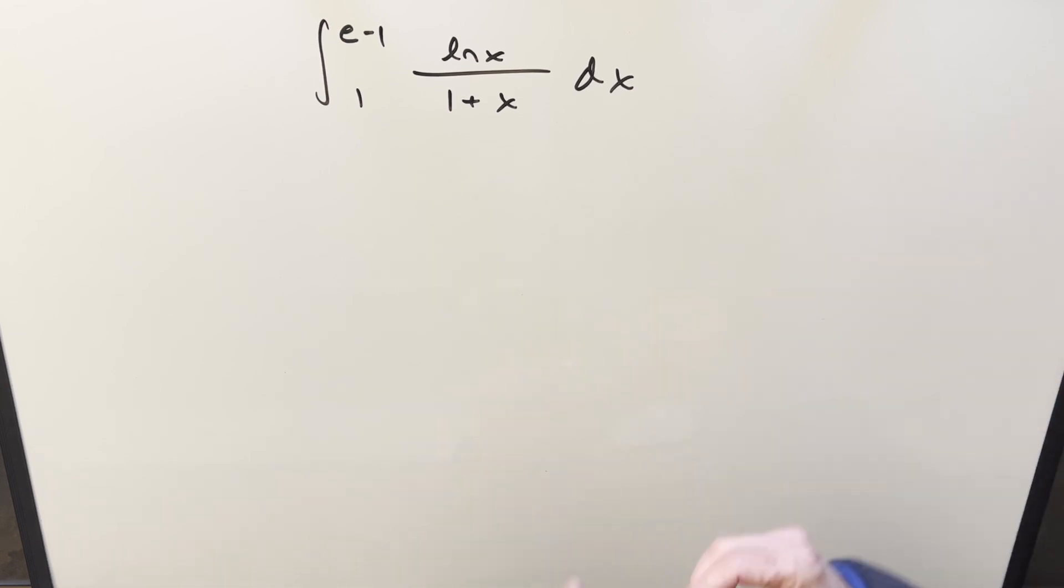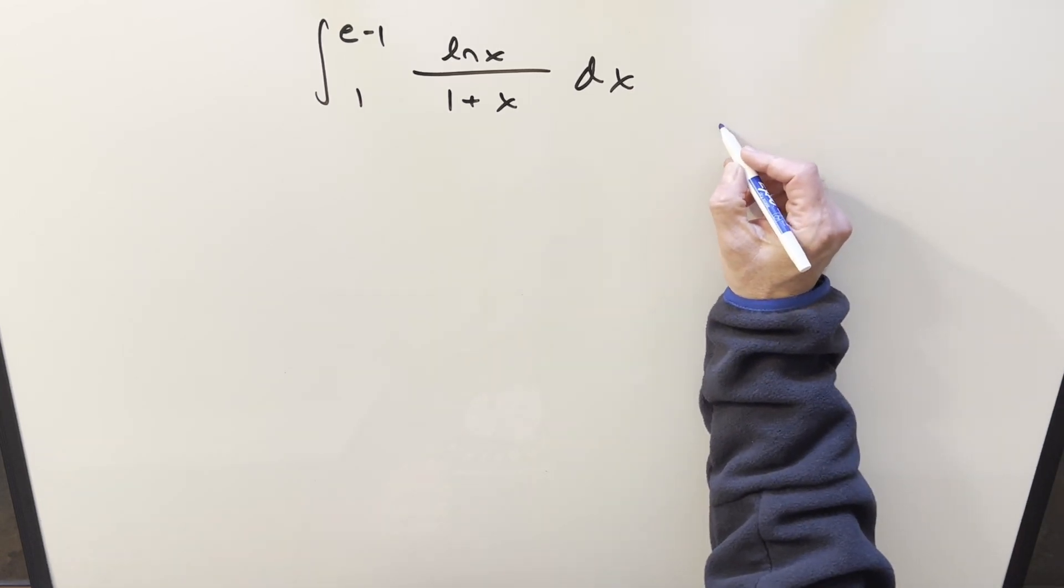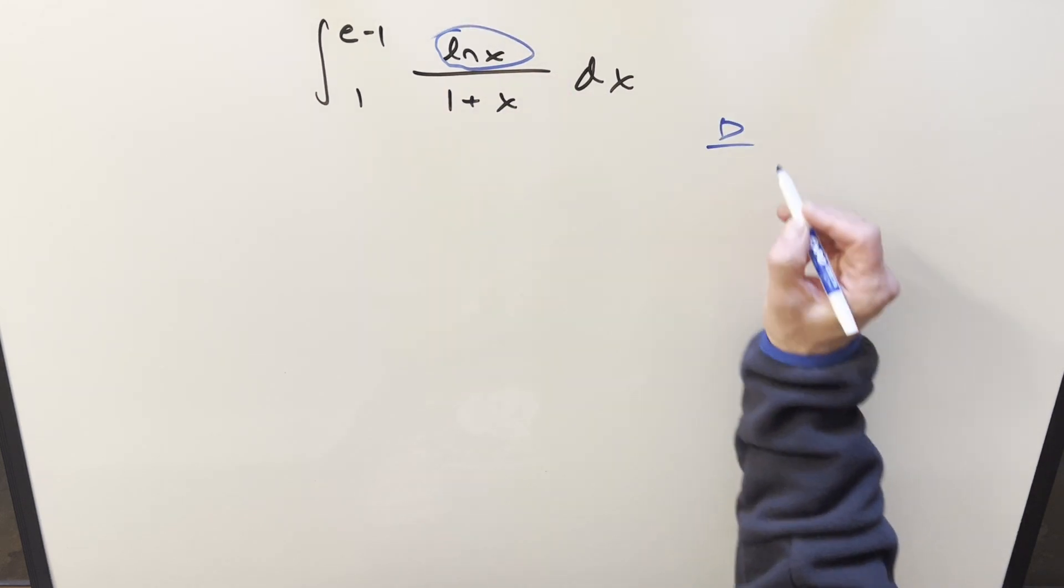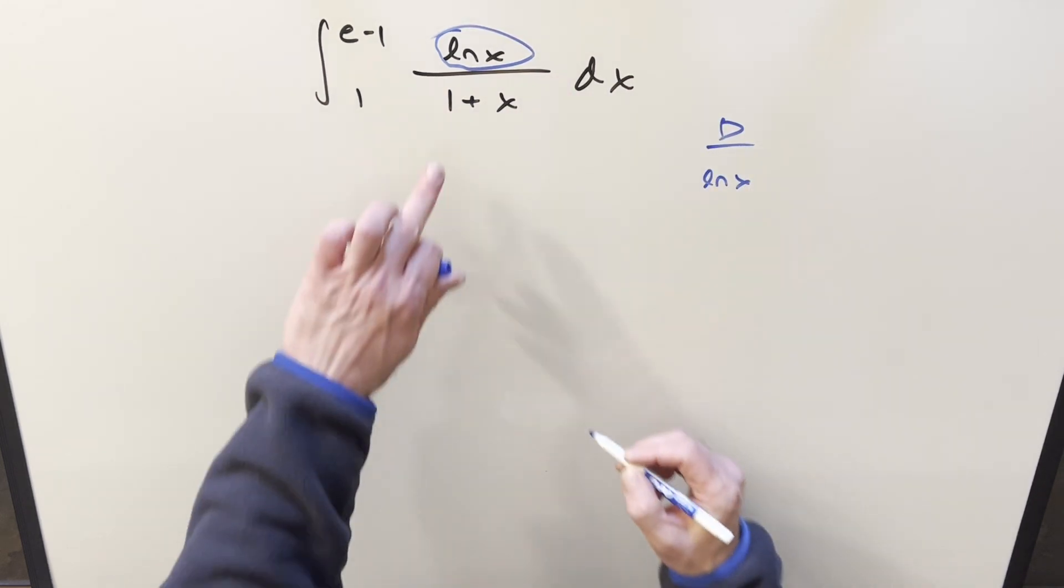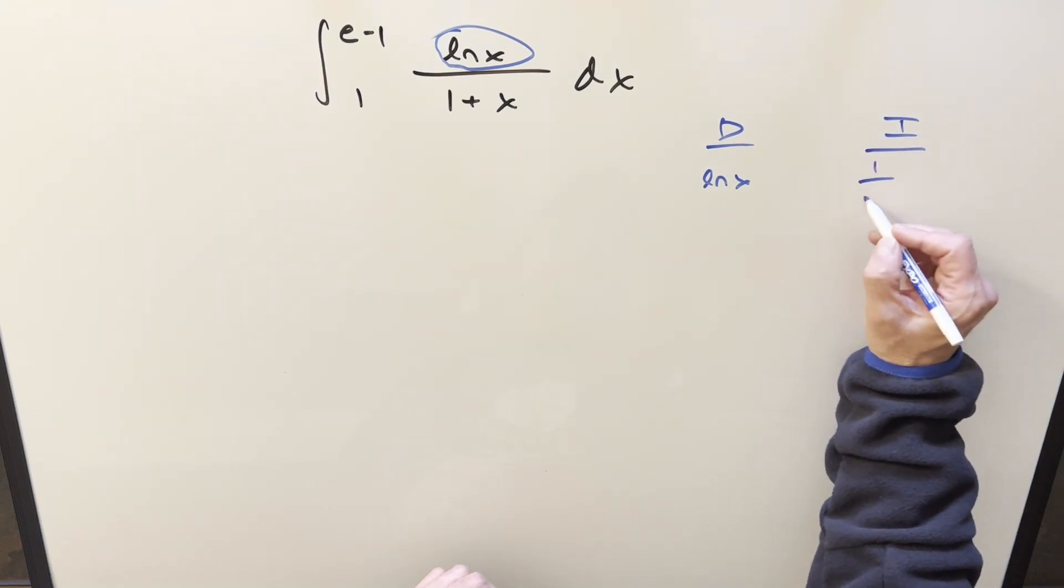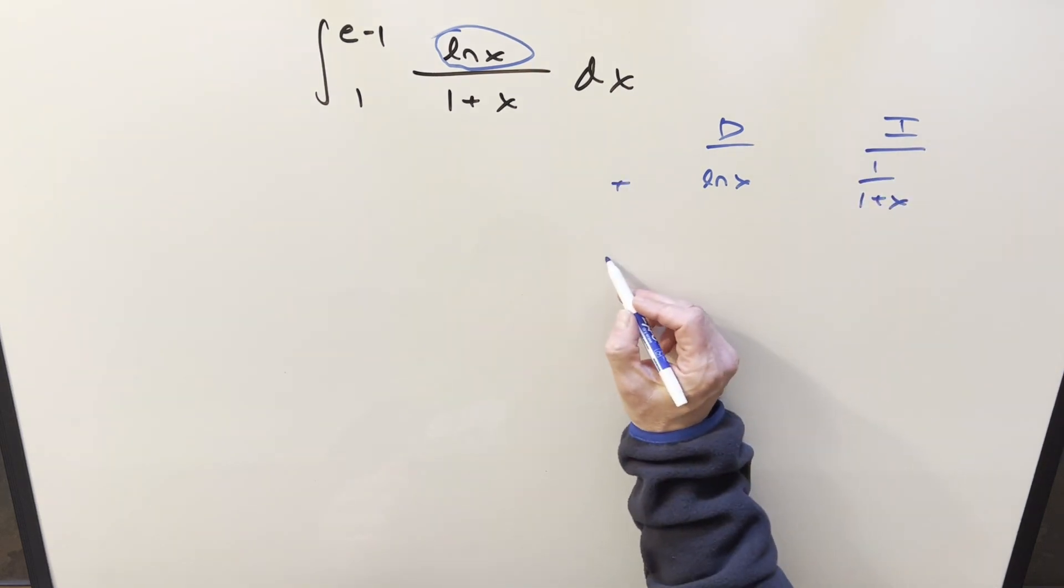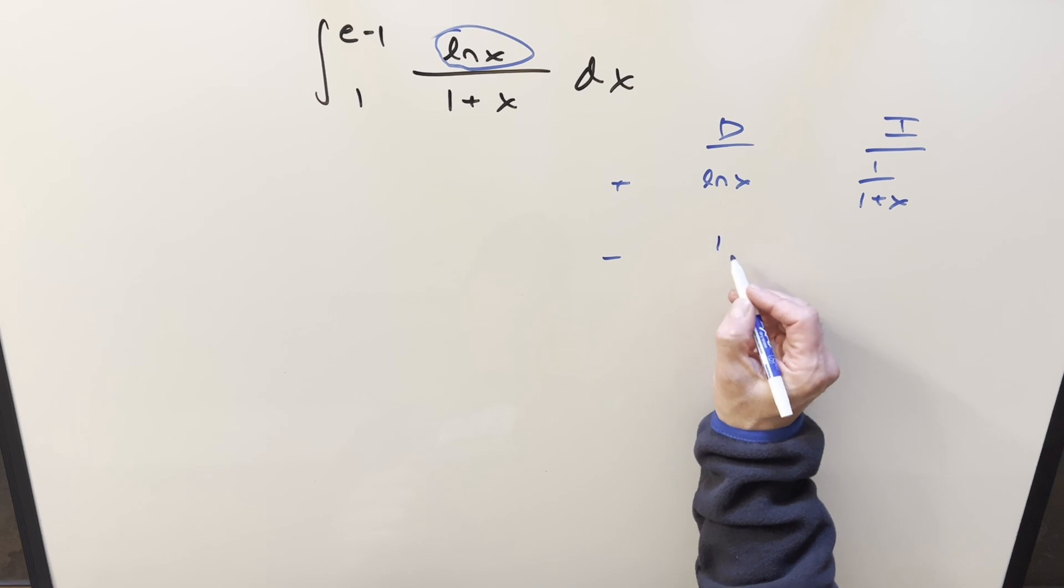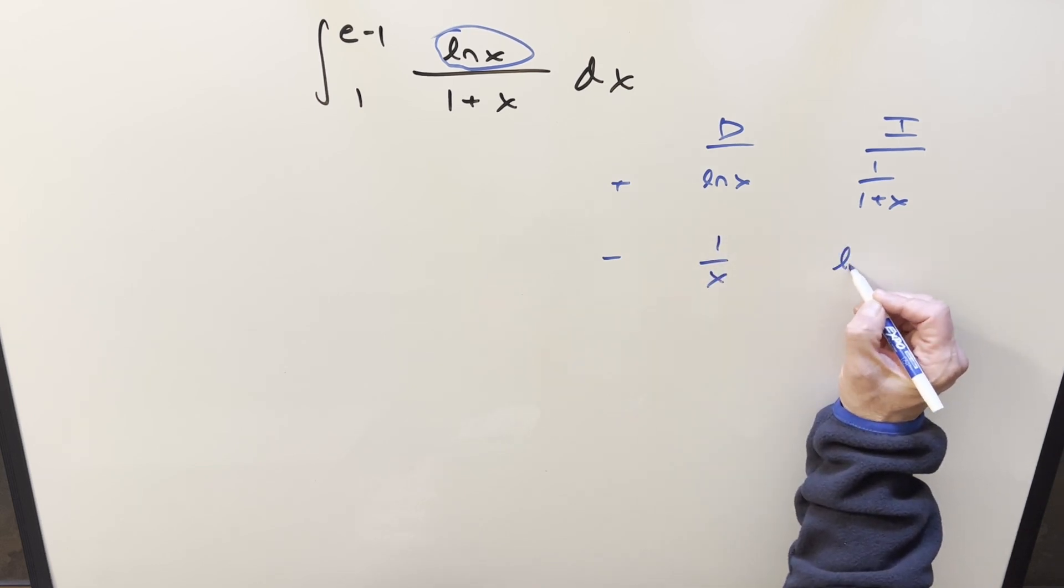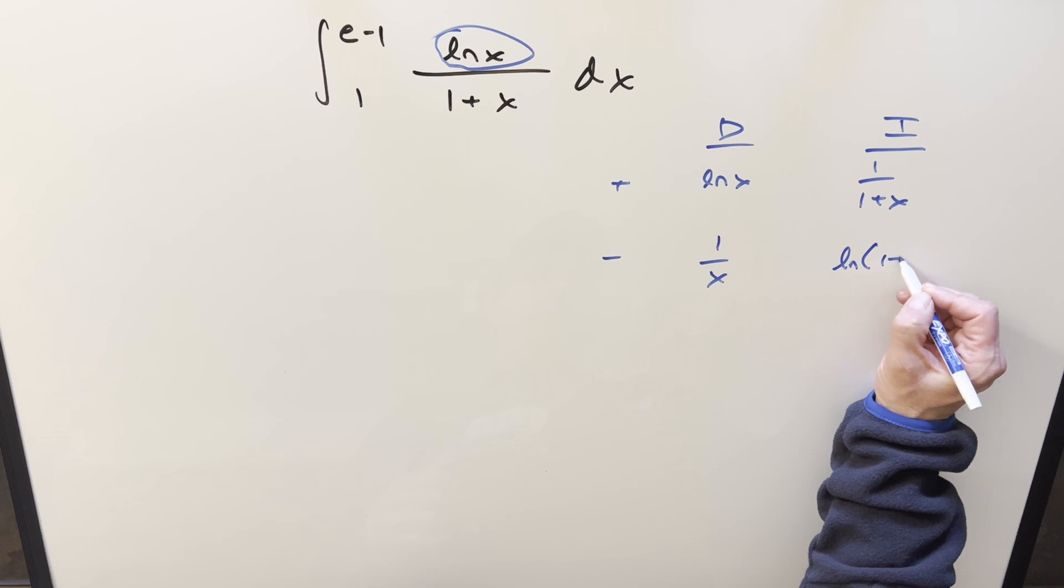We'll do the di method over here to the right, just because we like to differentiate ln x. So we'll differentiate that, and I'll integrate the rest of it, which is going to be 1 over 1 plus x. When I differentiate ln x, we get 1 over x. Here we integrate this, we get ln 1 plus x.